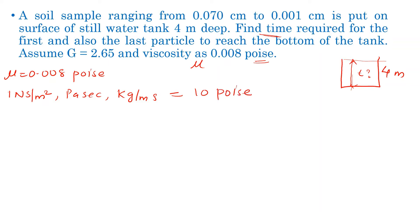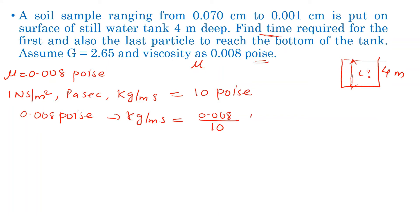Now let's start the unit conversion. Mu = 0.008 poise. Converting: 0.008 poise is equal to 0.008 divided by 10 kg per m·s.